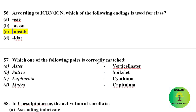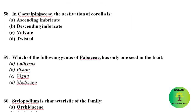Which of the following pairs is correctly matched? Aster belongs to family Asteraceae and its characteristic inflorescence is capitulum, not verticillaster — so that is wrong. Salvia belongs to family Lamiaceae and its characteristic inflorescence is verticillaster — also wrong as written. The correct answer is Euphorbia, which has a cyathium type of inflorescence. In Malva, family Malvaceae, the inflorescence is axillary — also wrong. The characteristic aestivation of Asteraceae corolla is ascending imbricate.